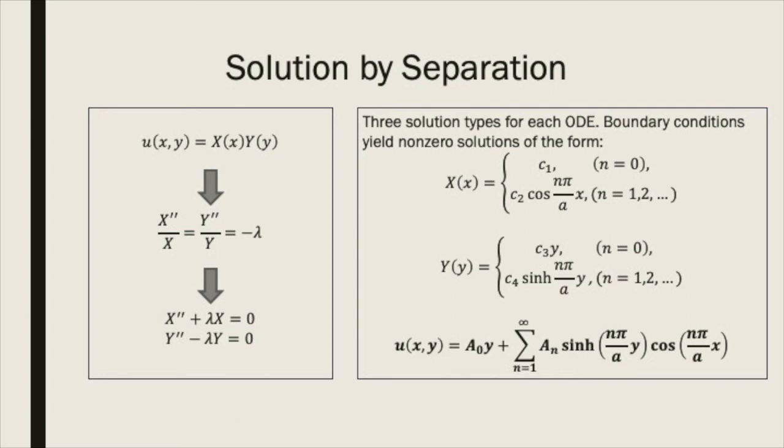The 2D Laplace equation is separable, and so we proceed again by separation of variables. Hopefully you guys have gotten used to this method of analysis by now. We have two ODEs with respect to x and y respectively. Each has three possible forms of solution.